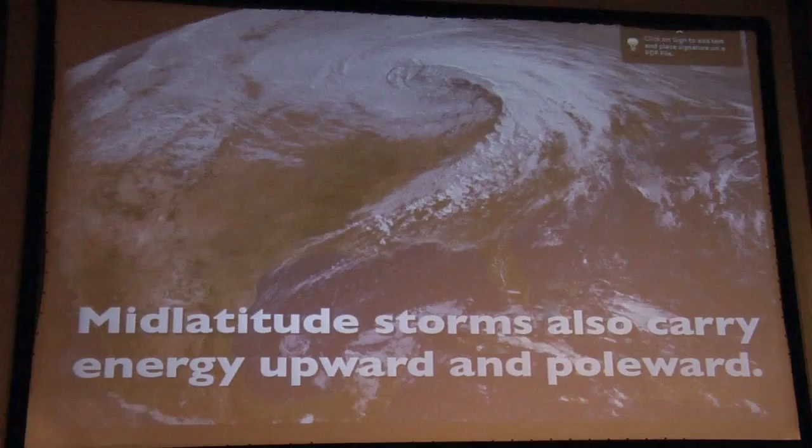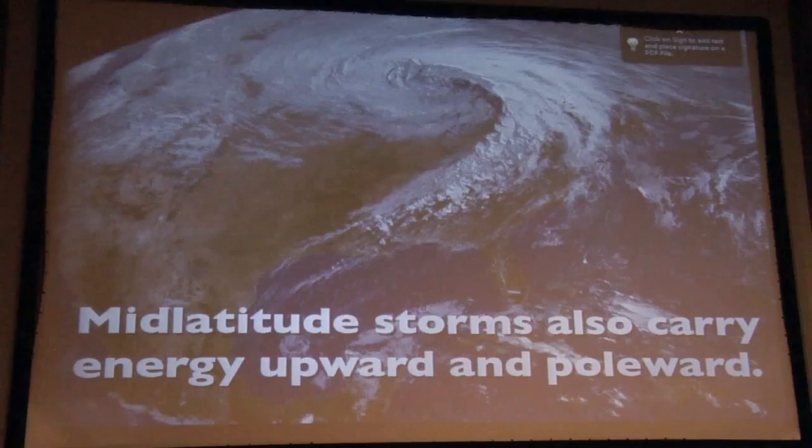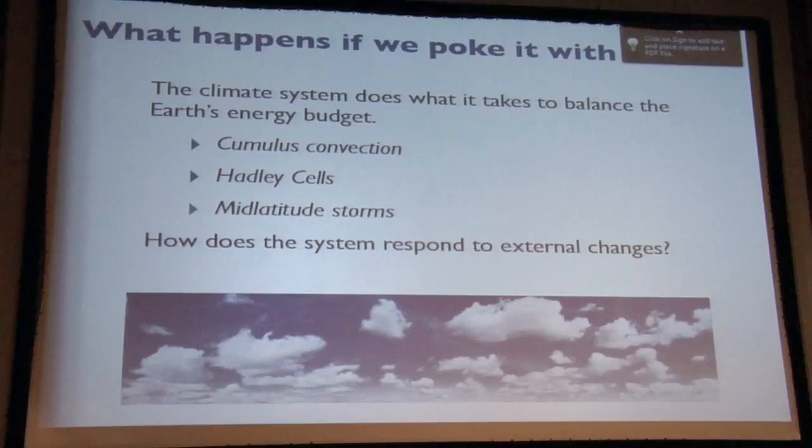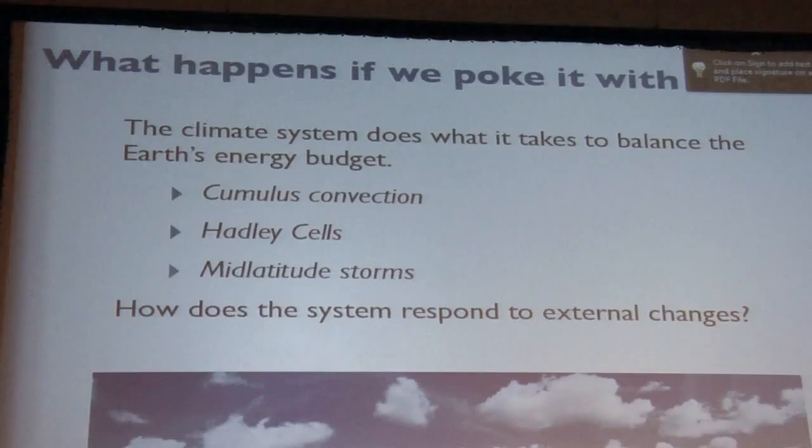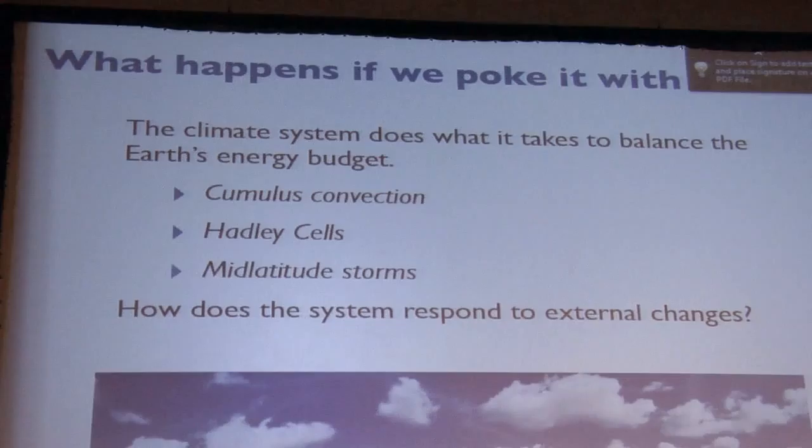Mid-latitude storms also carry energy upward and poleward. So, the idea is in the tropics, it's the Hadley circulation and the thunderstorms. And, in mid-latitudes, it's these guys that we all experience here in North America, and, again, thunderstorms. So, a combination of ways. As we ride along this cloud sheet here, the air parcels are actually gradually rising. That's why you see a cloud. So, the energy is being carried upward, but it's also being carried toward the north.